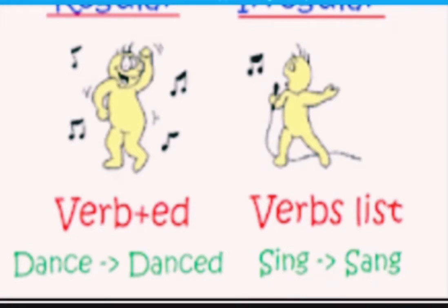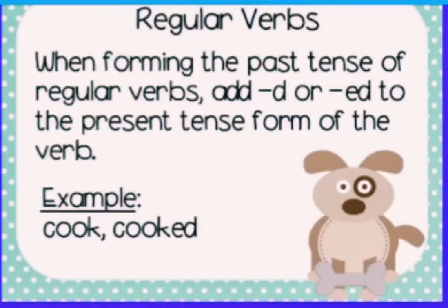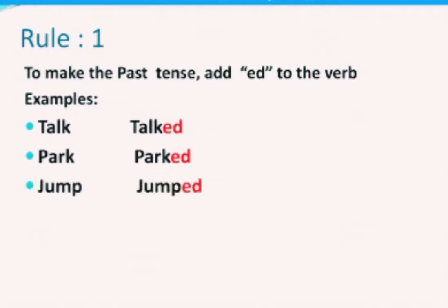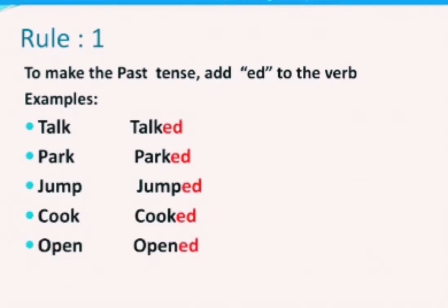While forming or writing past regular verbs, we just add 'd' or 'ed' to the verbs. The first rule is to make the past tense: add 'ed' to the verb. For example, 'talk' becomes 'talked', 'park' becomes 'parked', 'jump' becomes 'jumped', 'cook' becomes 'cooked', 'open' becomes 'opened'. These are examples of past regular verbs — we simply added 'ed' to these words.